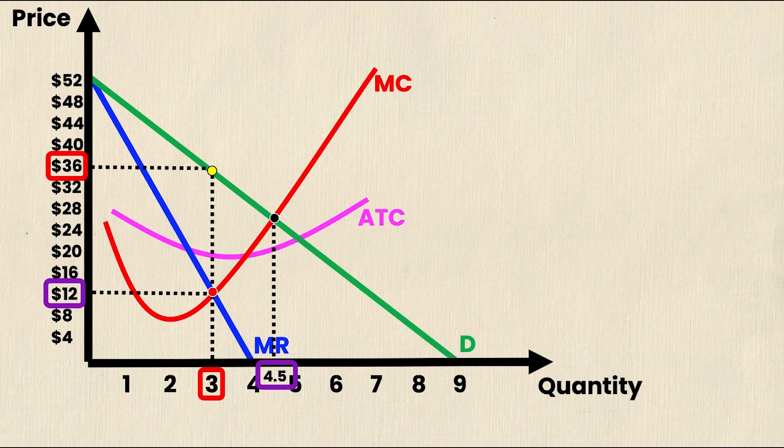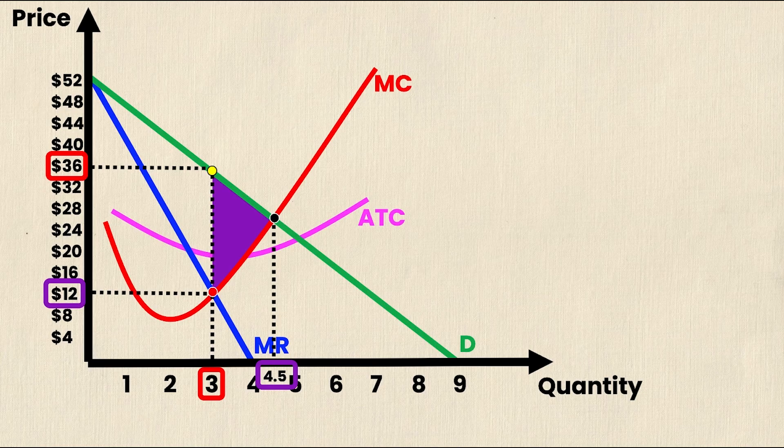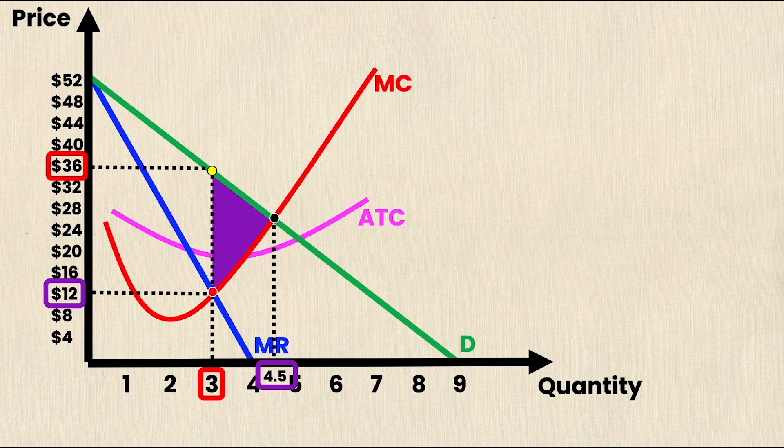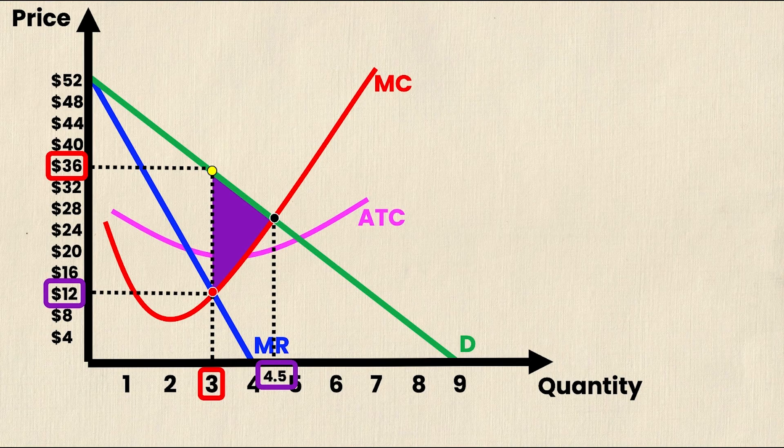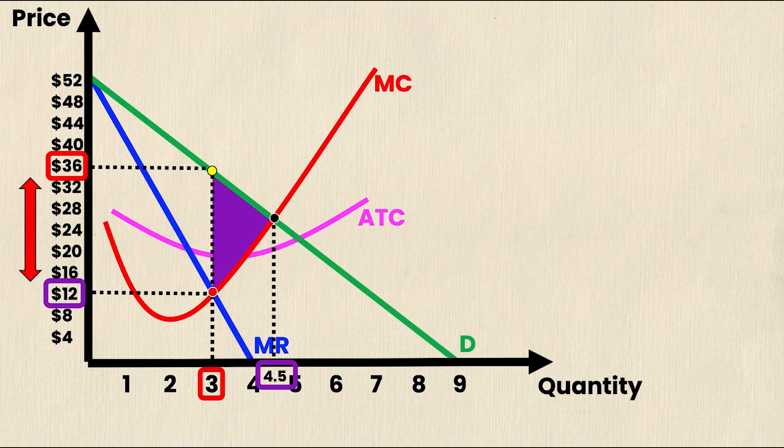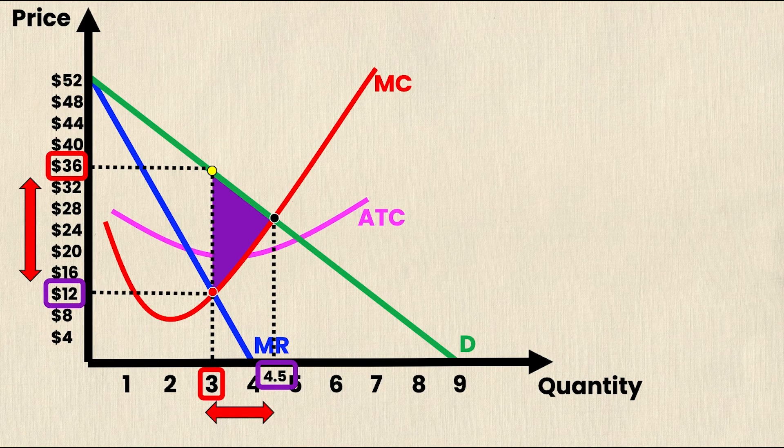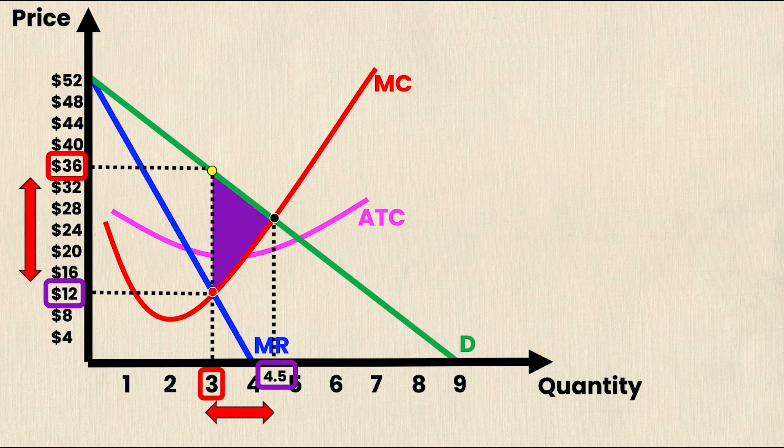This is all the information that you need. You'll see that there's a triangle between these three points. That triangle represents your deadweight loss. So all we need to do is calculate the area of this triangle between these three points, and that will give us a value for deadweight loss for this monopolist market. The base of the triangle is the difference between 36 and 12, and the height of the triangle is the difference between 3 and 4.5.